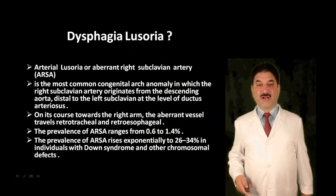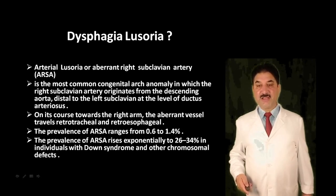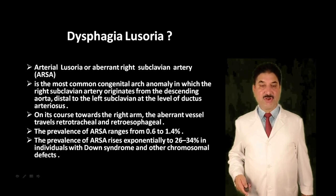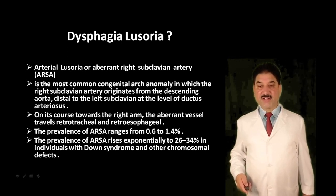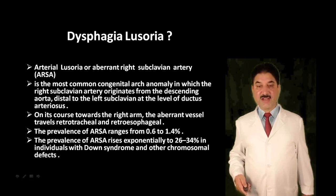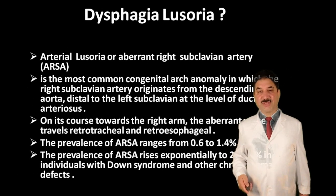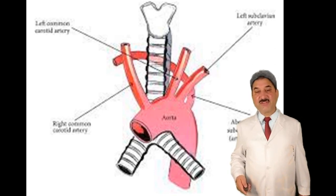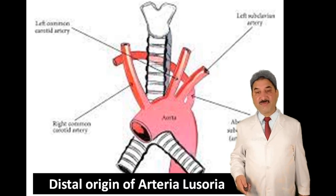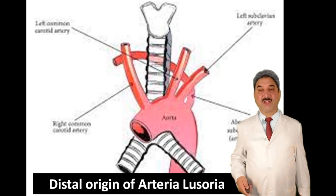What is dysphagia lusoria? Arteria lusoria, or aberrant right subclavian artery, is the most common congenital arch anomaly, in which the right subclavian artery originates from the descending aorta distal to the subclavian and at the level of the ductus arteriosus. On its course towards the right, the aberrant vessel travels retro-tracheal and retro-esophageal. The prevalence is very high — about 26 to 34 percent — in Down's syndrome and other chromosomal anomalies. In the diagram, the distal origin of arteria lusoria is shown where it arises from the arch of aorta distal to the subclavian artery, passes posterior to the esophagus, and compresses it, leading to dysphagia.